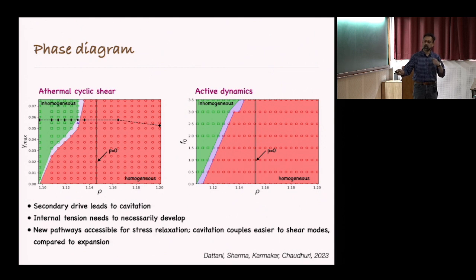The magnitude of the oscillatory shear or active dynamics determines when cavitation will happen. This green region corresponds to cavitation and so on.